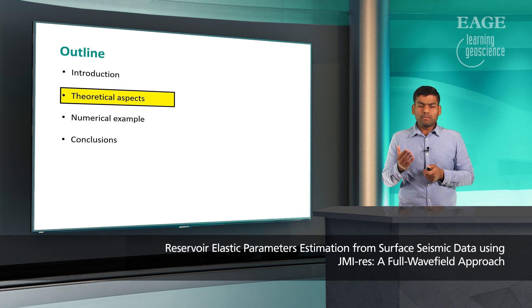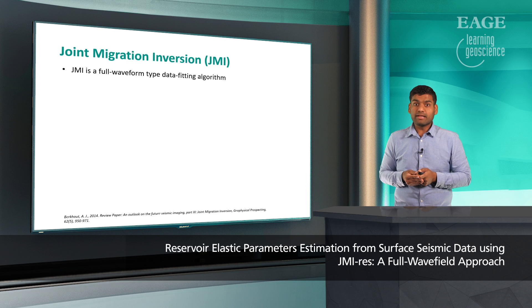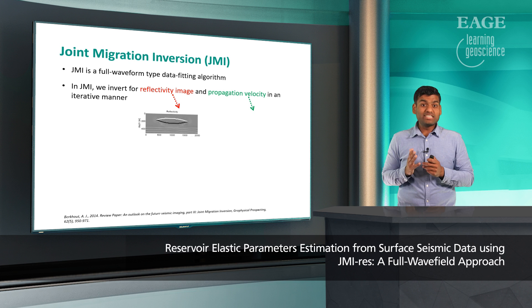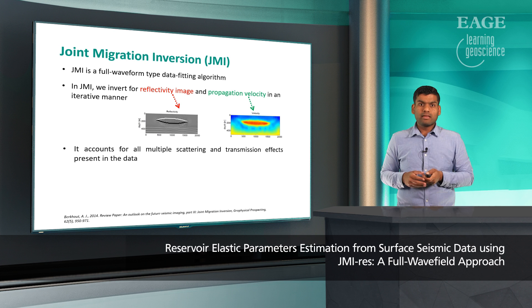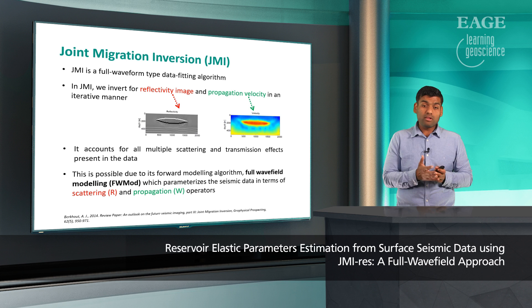Now let me discuss in detail the major steps of JMI-RIS. Joint Migration Inversion, or JMI, is a full waveform-type data fitting algorithm — it explains the data sample by sample, similar to full waveform inversion. However, in JMI we invert for reflectivity image and propagation velocity, combining migration with tomography. Most importantly, it accounts for all multiple scattering and transmission effects in your data, achieved via its forward modeling algorithm, full wave field modeling, which parameterizes the data in terms of a scattering operator and a propagation operator. This also reduces the nonlinearity associated with seismic data.